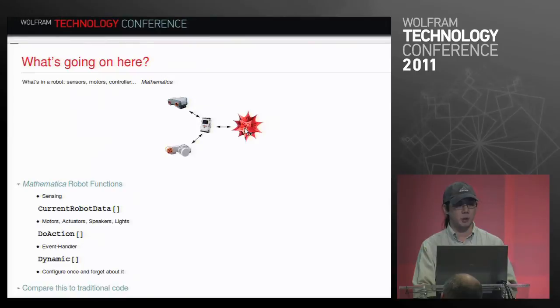And Mathematica handles all that for you. What functionality do we have? Here's the main functions. Current robot data will grab data from whatever sensor you hook up to it. It abstracts all the difficulty away from you. You just immediately get the data. It streams it for you.